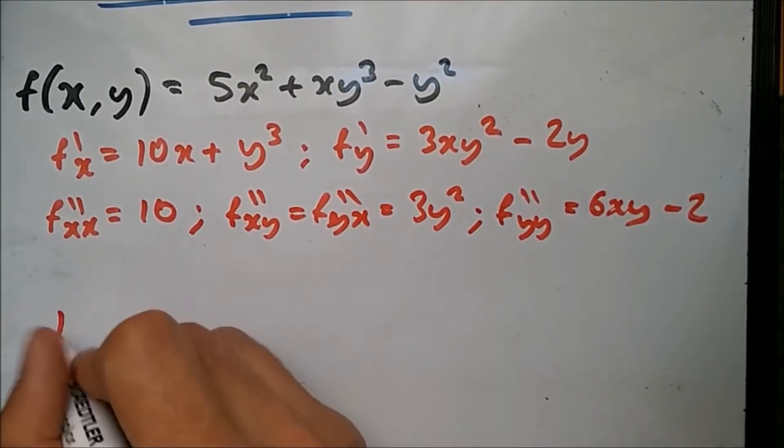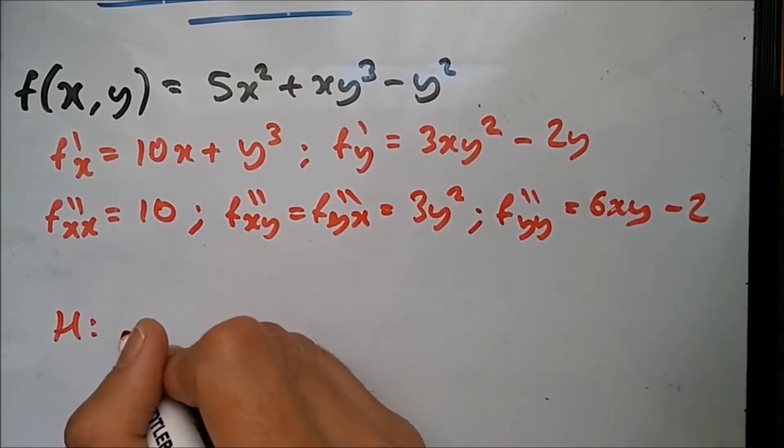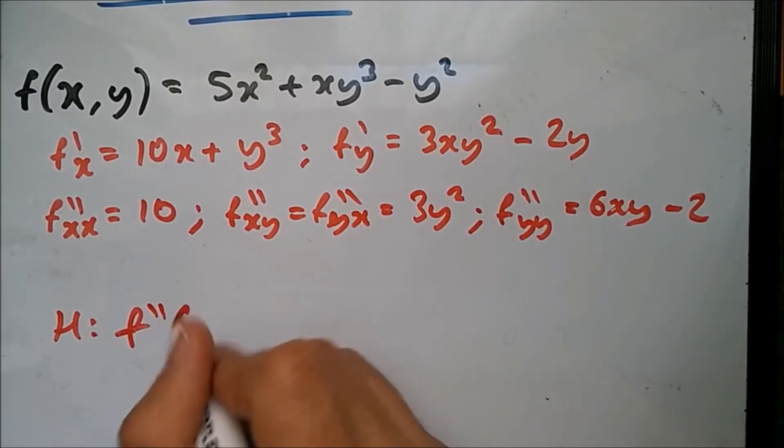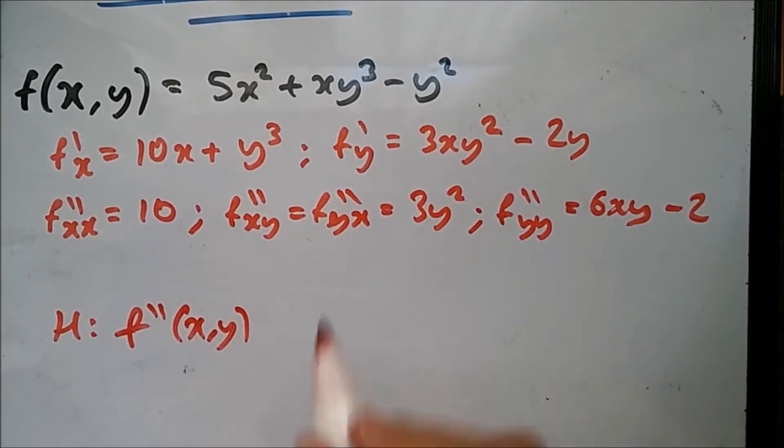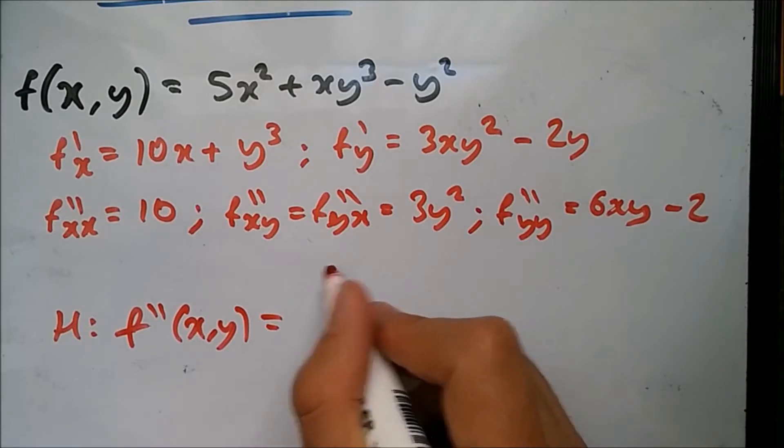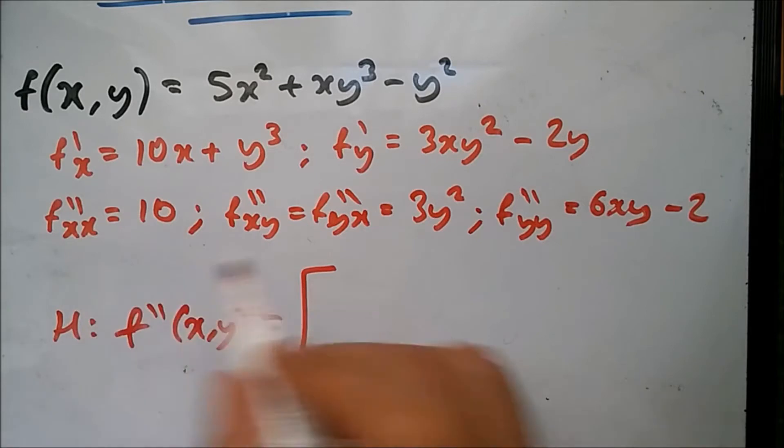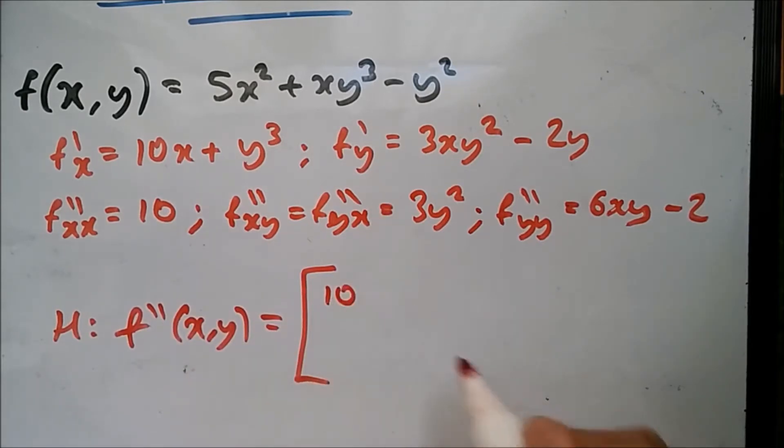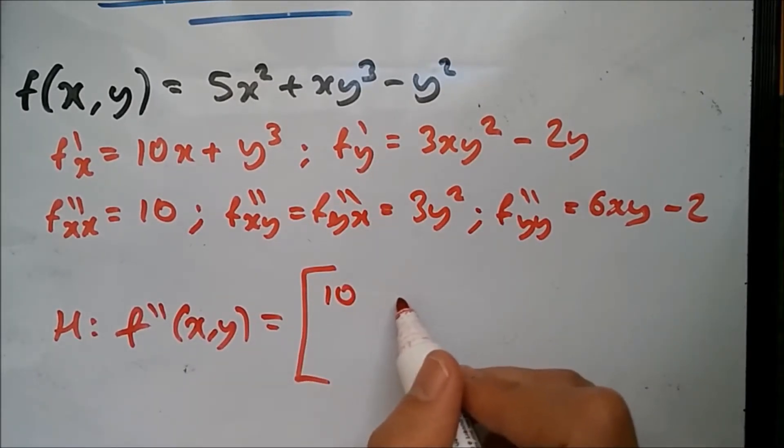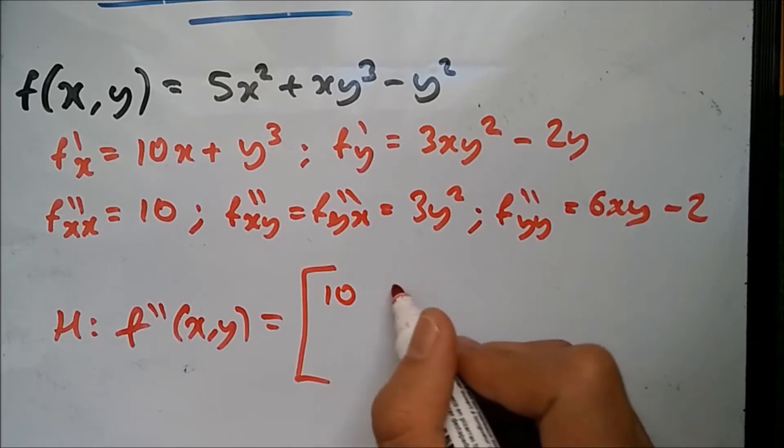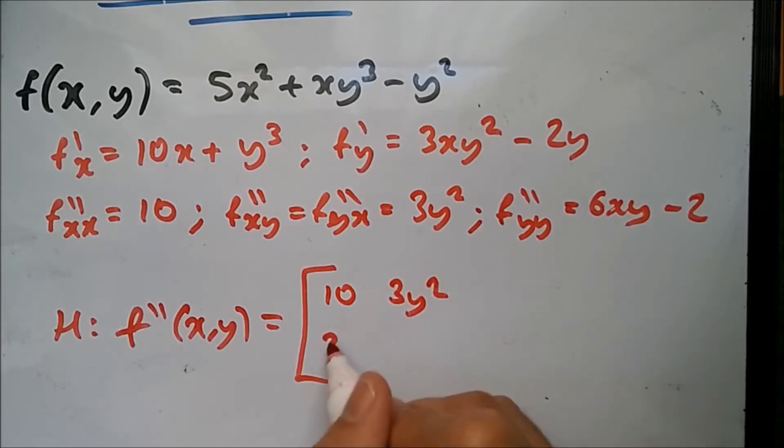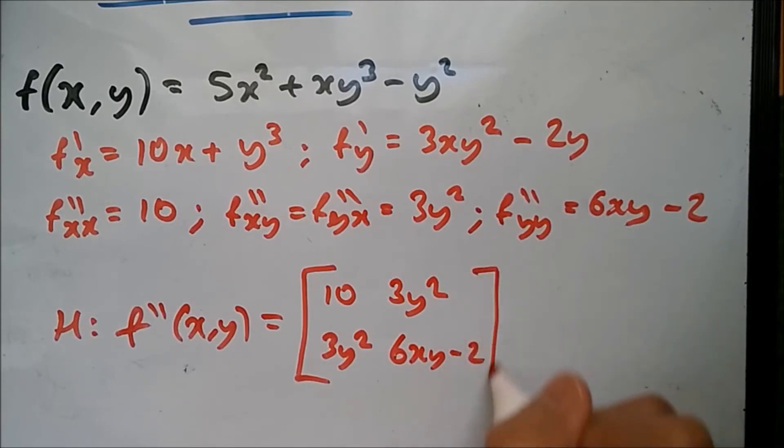And all you have to do now is substitute this into the Hessian matrix, which we said was f'', in this case we can just call it XY since we know how many variables we have, and it's gonna be a 2 by 2 matrix. So the first position is f''xx which is 10. This part is going to be fxy, this would be fyx, so this would be 3y², 3y². And this last term would be f''yy, this would be 6xy - 2. And that's it.